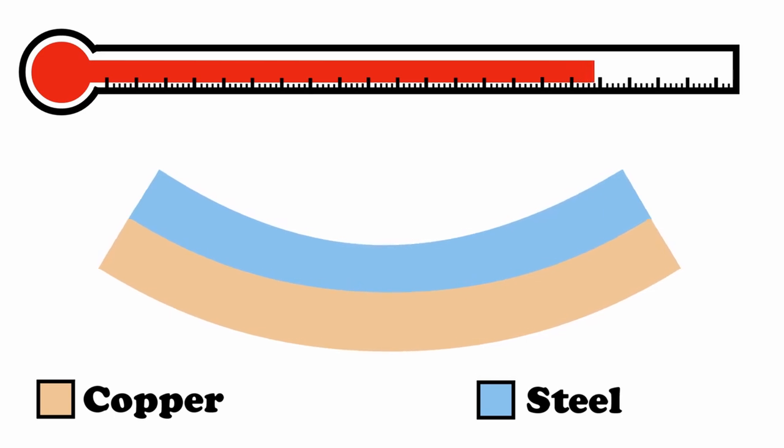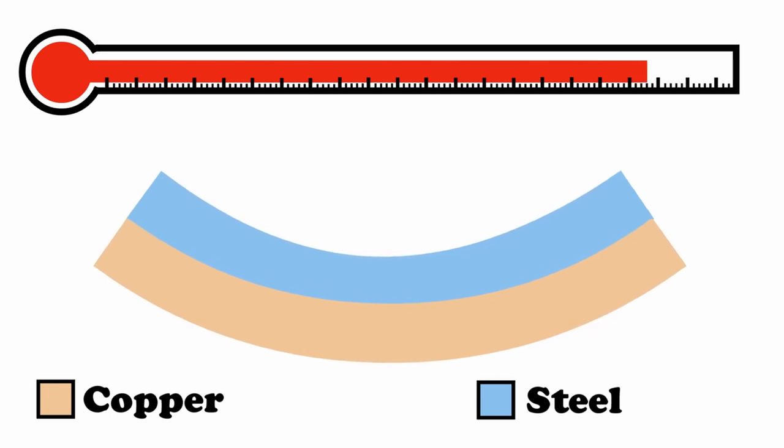This is why in older toasters you have to vary the settings if you are making multiple rounds of toast. As the bi-metallic strip is already warm, so it shuts off the circuit earlier than desired.